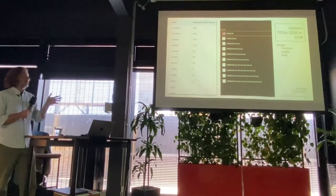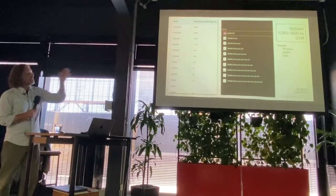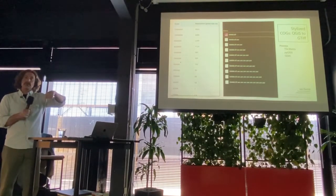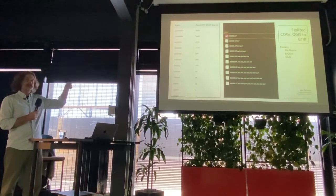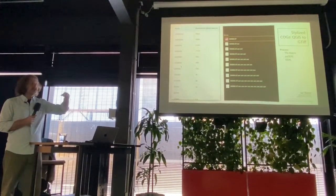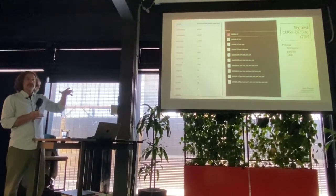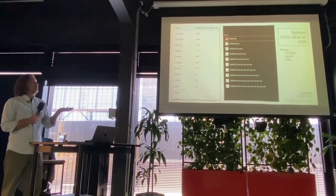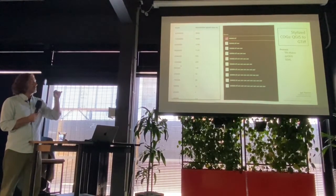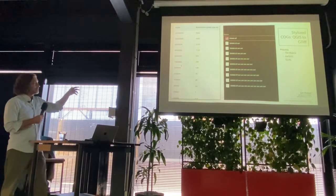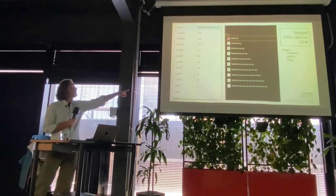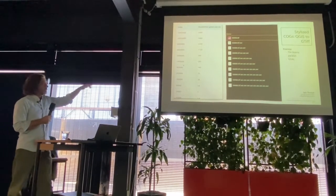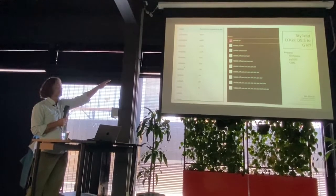In GDAL and in QGIS, overviews can read overviews of themselves. So if you create an overview of an overview, you just keep going on and on, and you set this structure up to be your tile pyramid. The 1:50,000 scale is your base scale — that's your highest resolution. That 50,000 TIFF has a resolution of 14 metres per pixel, with the extent set on it. The next zoom level — the 1:100,000 scale — is the next overview level.